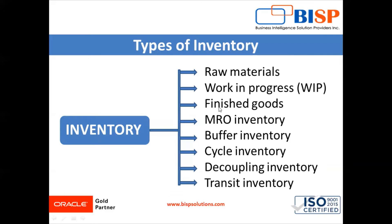Next is finished goods. Finished goods are the final items that are ready for sale in the market. These goods have passed through all stages of production and quality checking. For the cookie manufacturer, the final packets of cookies that are sent to the market for selling after undergoing quality checks are called finished goods.